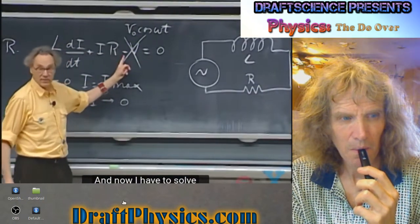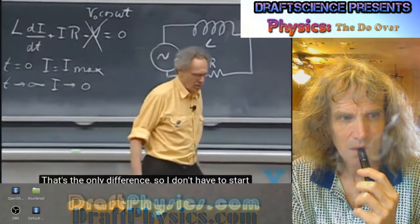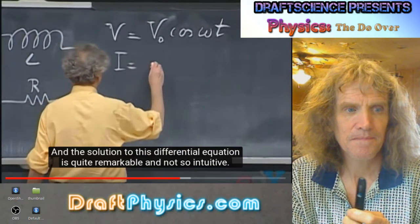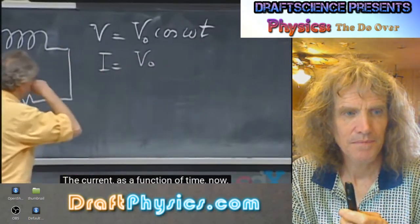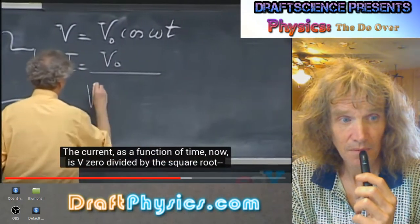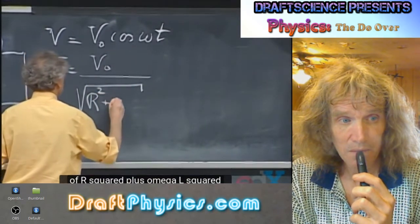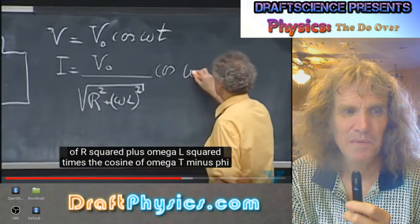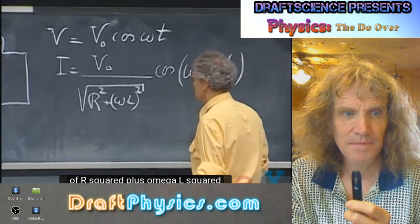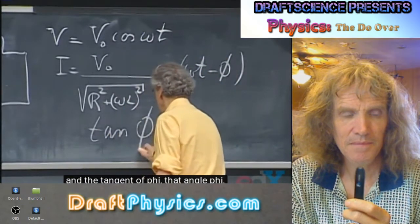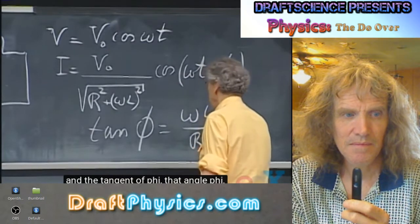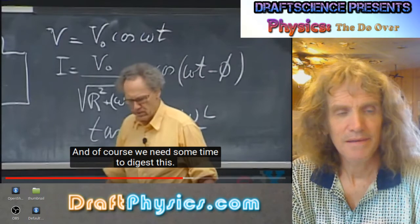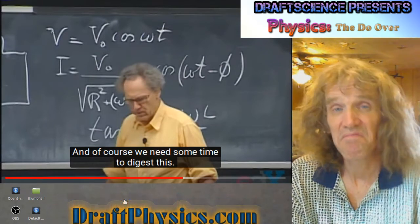I have to solve this differential equation — that's the only difference. The solution is quite remarkable and not so intuitive. The current as a function of time is V0 divided by the square root of R squared plus omega L squared, times the cosine of omega t minus phi. The tangent of phi is omega L divided by R.